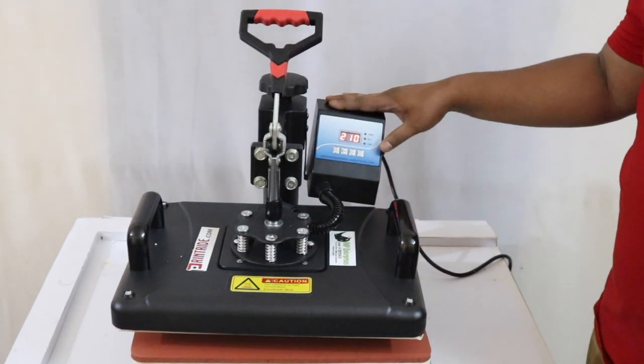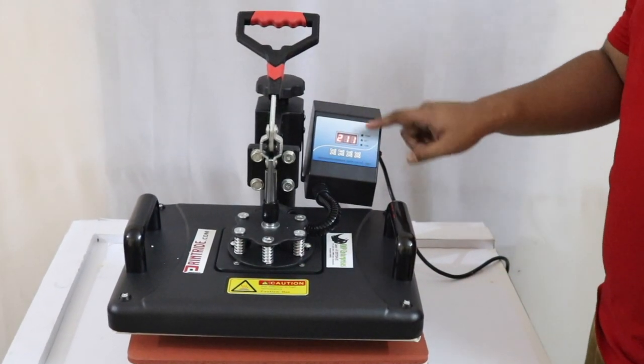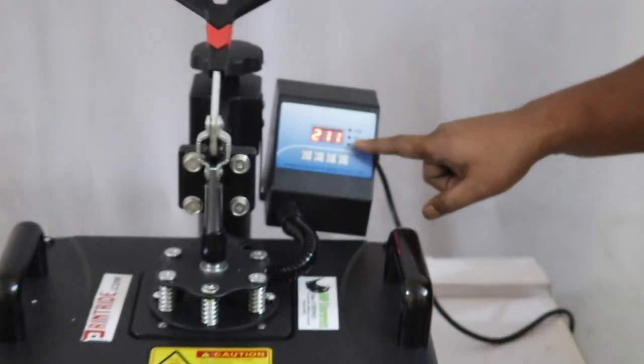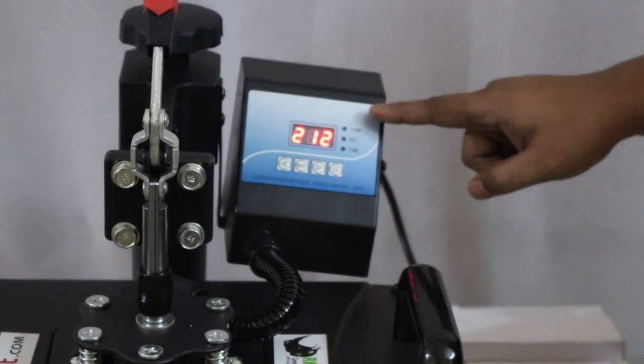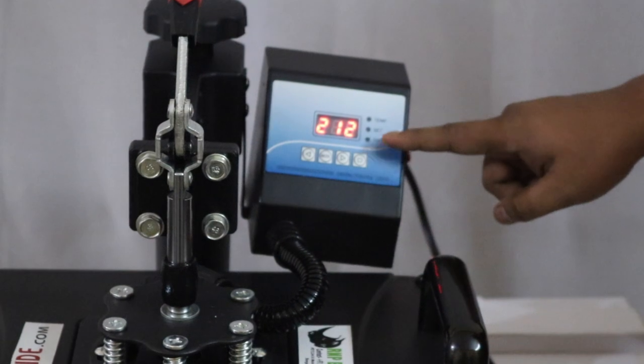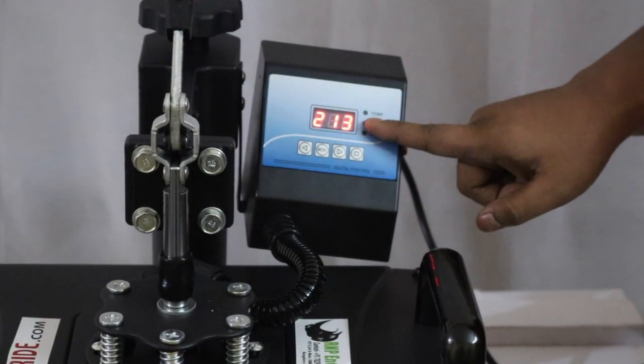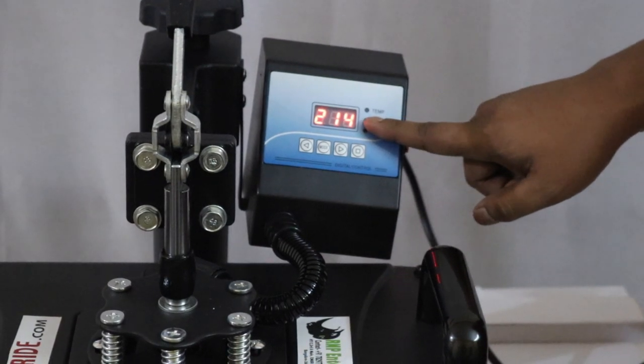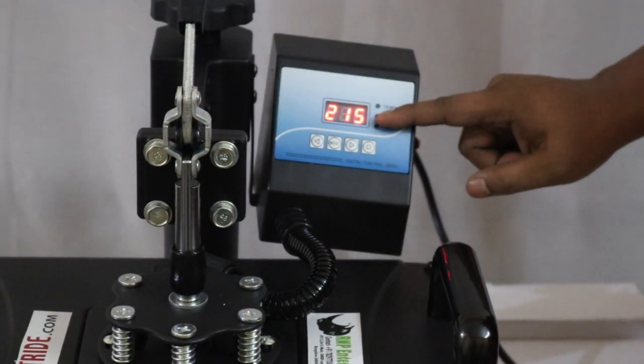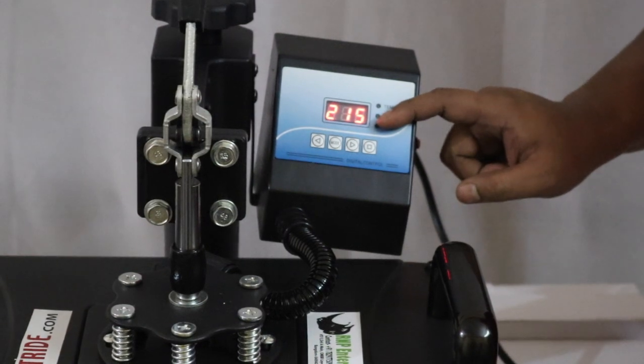Now we'll set the temperature and the time. In this meter we have three columns: temperature, set, and time. First of all we have to adjust the set. Set means the alarm that tells you when to put your t-shirts or whatever material you have.